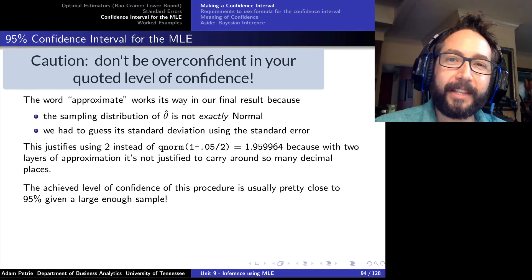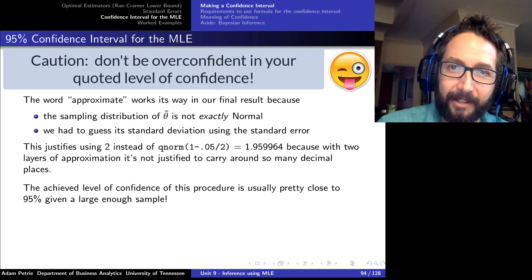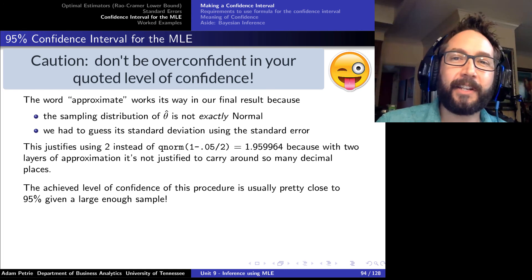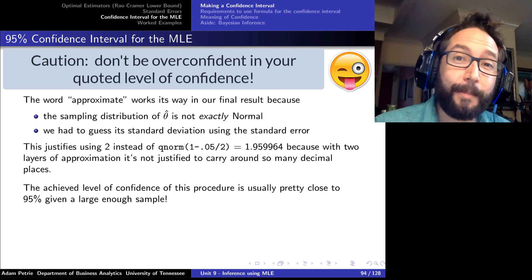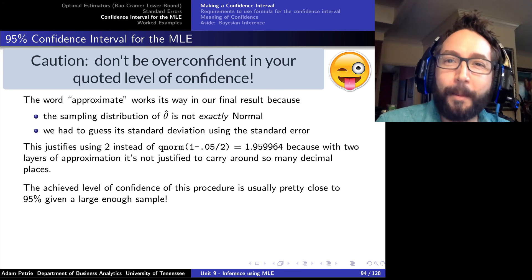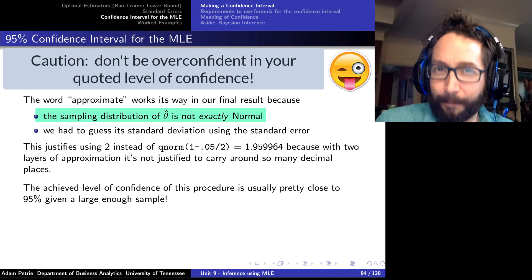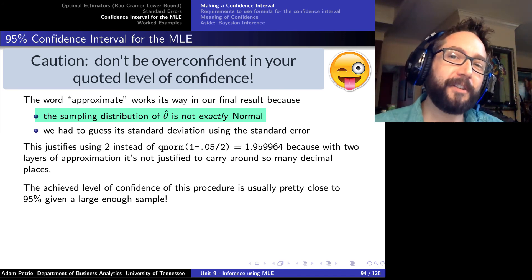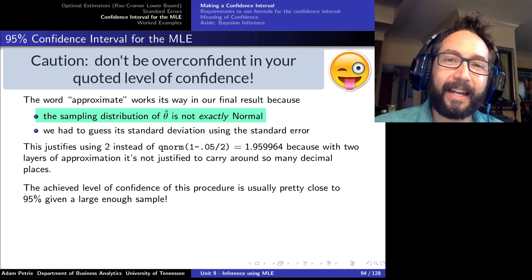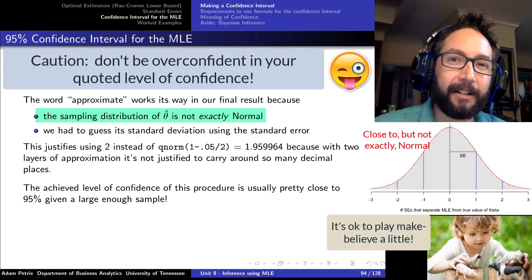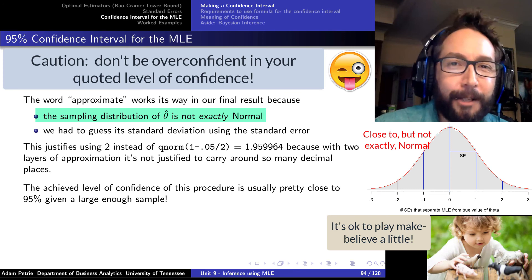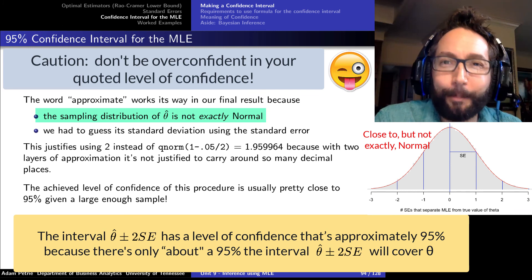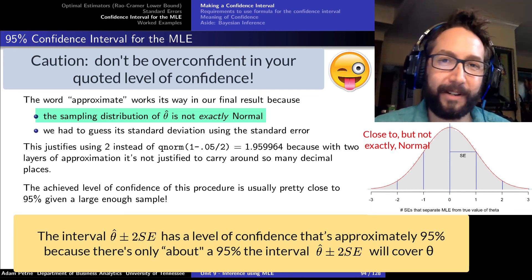We want to be a little careful here — this has an approximate confidence level of 95%. Why approximate? There are actually a lot of approximations involved. Number one, we used the empirical rule, which is a rule about normal distributions, but the sampling distribution of the MLE isn't exactly normal — it's just pretty close. So whenever we talk about confidence levels of our intervals, it's only approximately 95% or 99%.